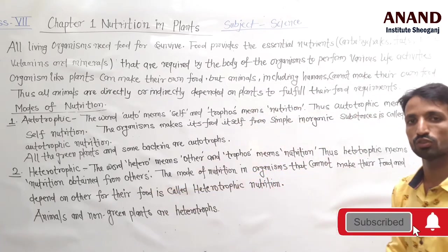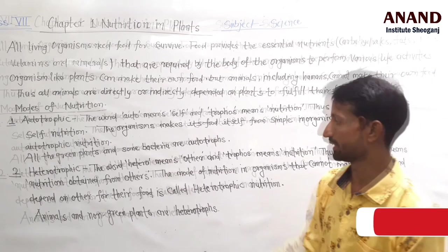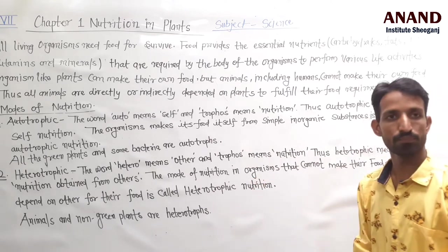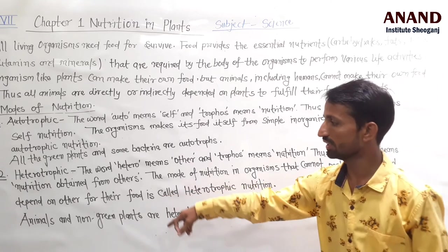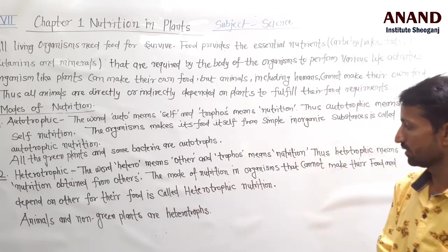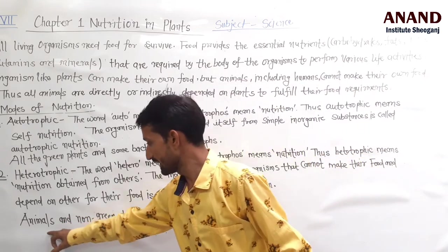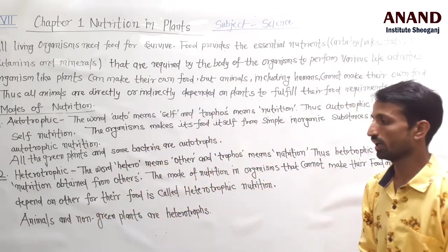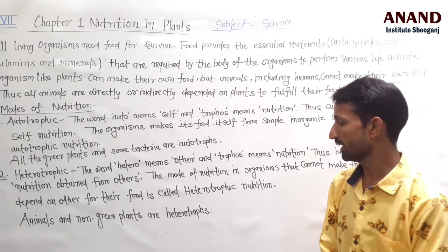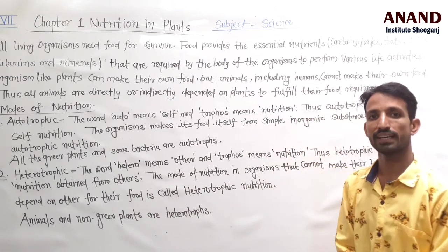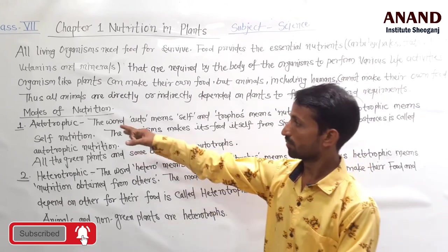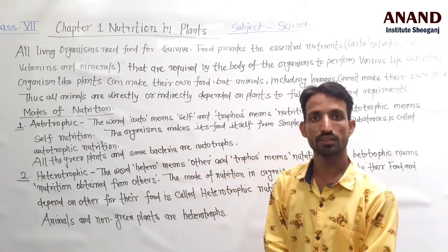Heterotrophic nutrition refers to nutrition obtained from other organisms. It is the mode of nutrition in organisms that cannot make their own food and depend on others for their food. Examples include animals and non-green plants. In this chapter, we have discussed the two modes of nutrition: autotrophic and heterotrophic.